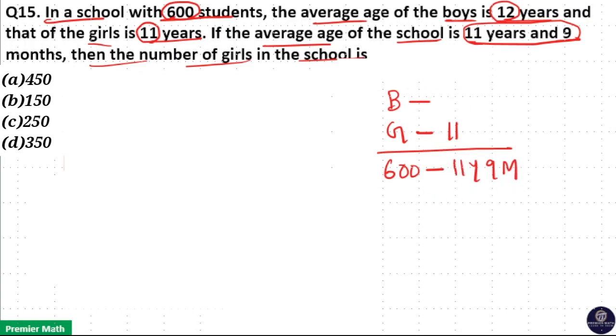So I will write 12 as 11 plus 1. Now this extra 1 is for the total number of boys. So 1 into B.